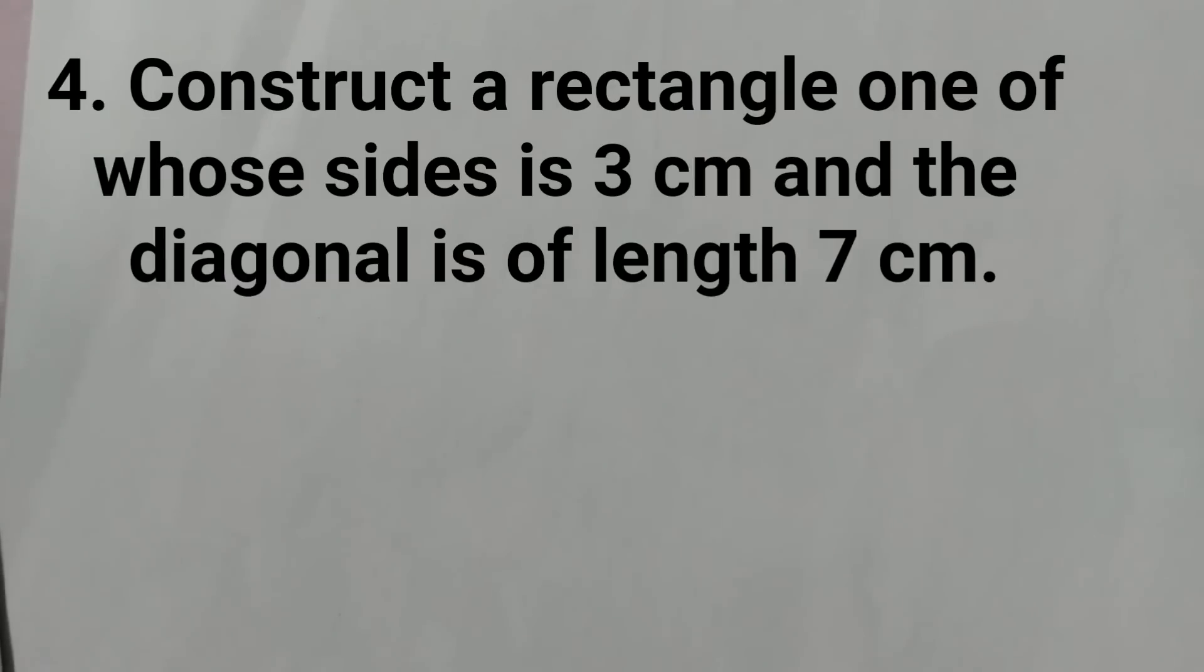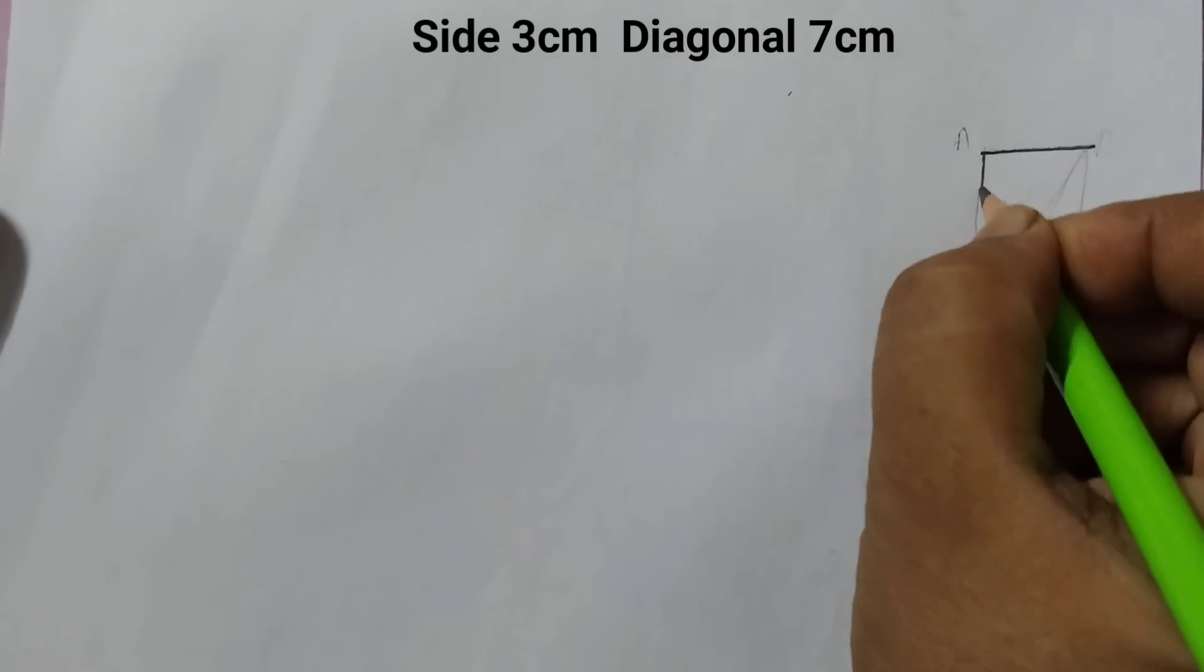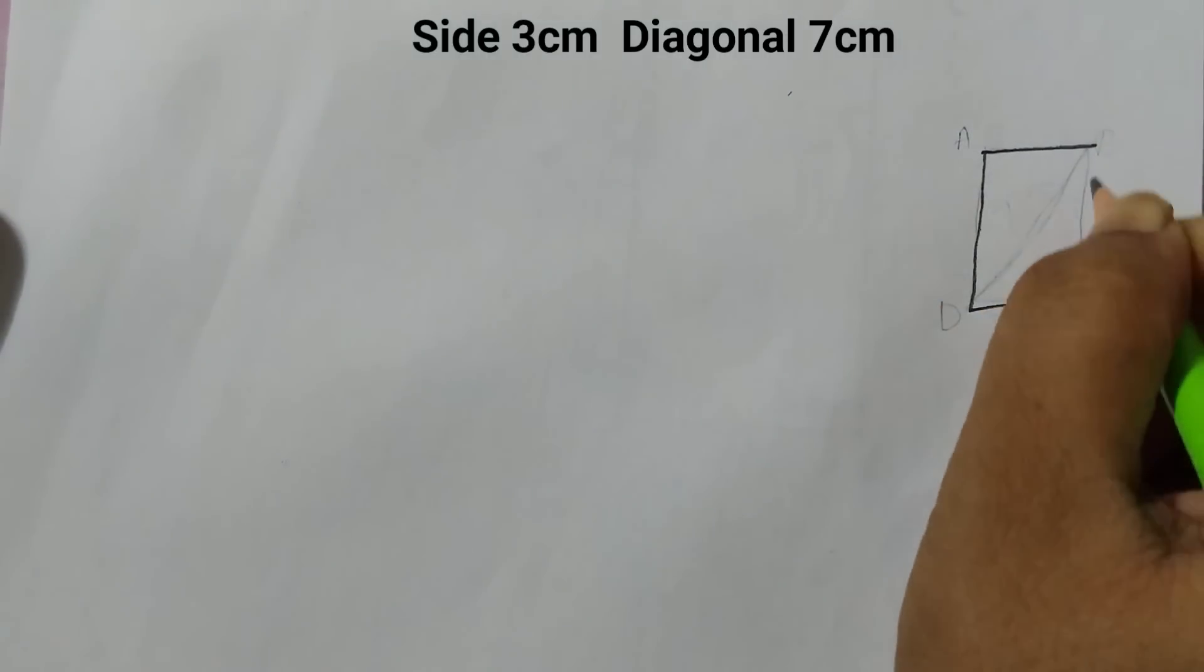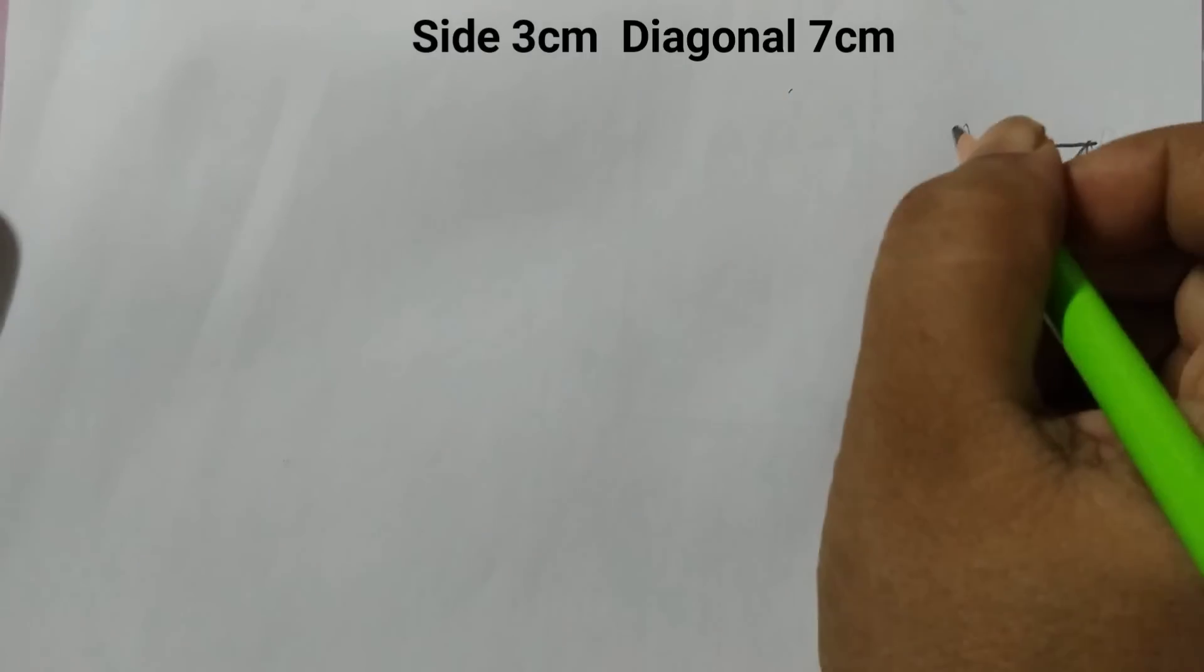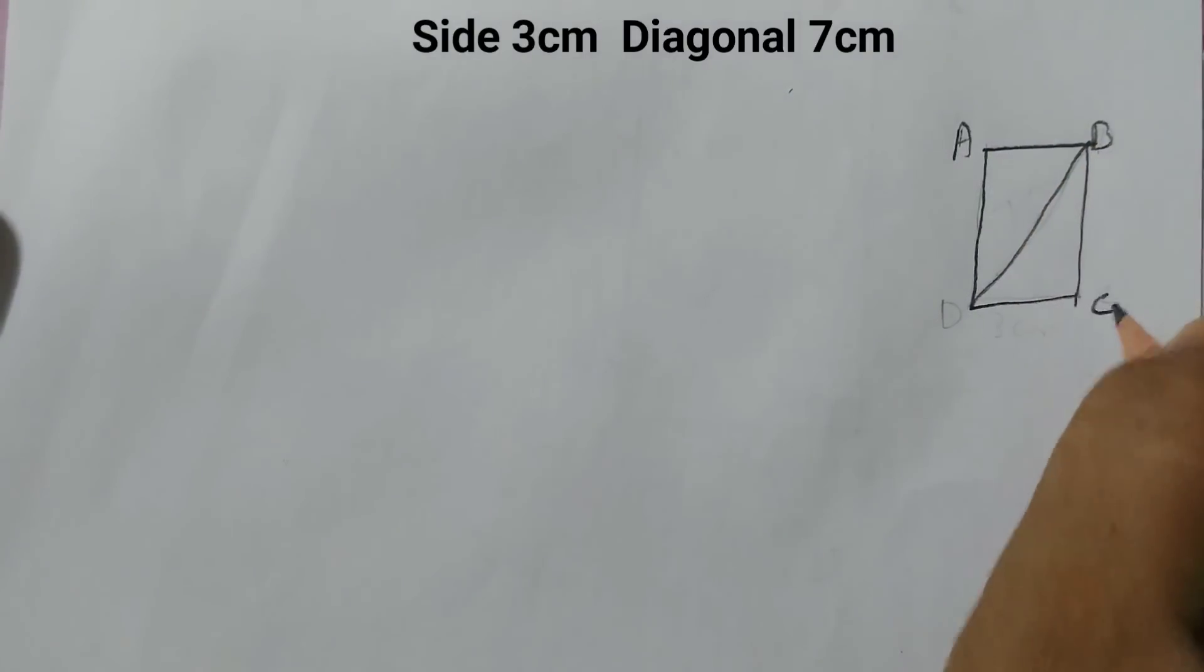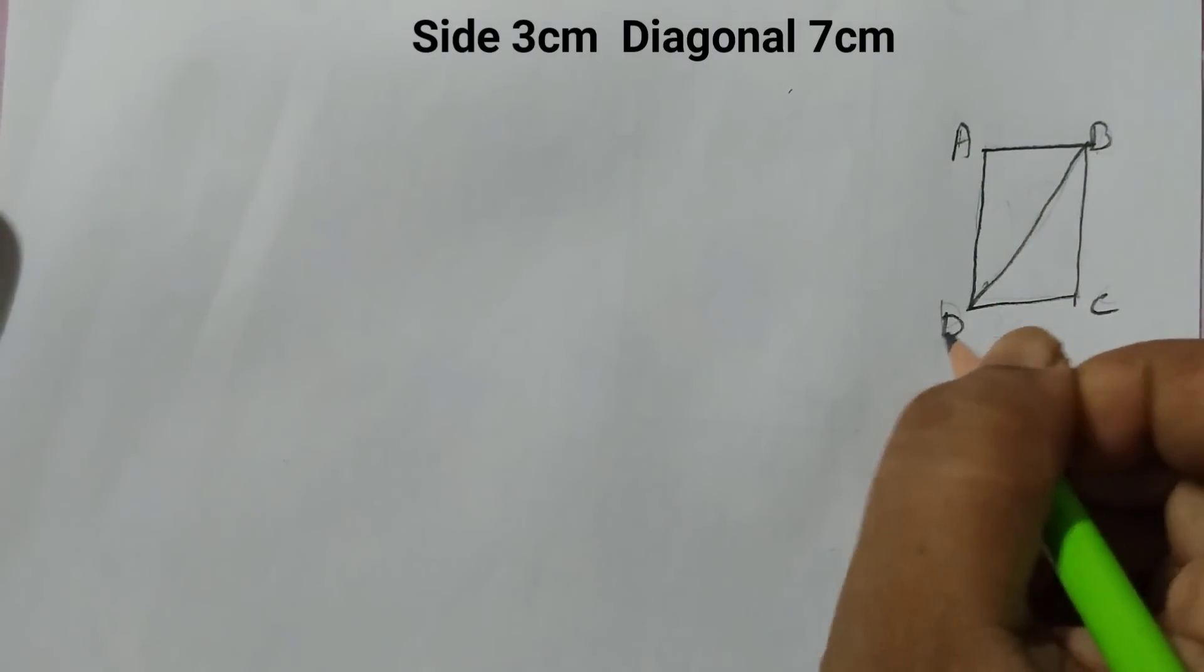So first we will draw a rough diagram for this. This is a rectangle that we are going to draw with a diagonal. Label it as A, B, C, and D.